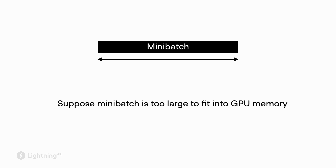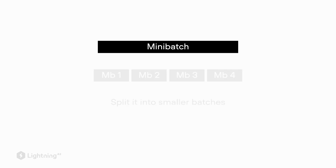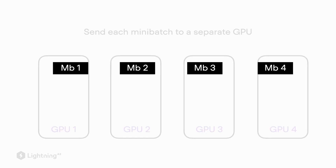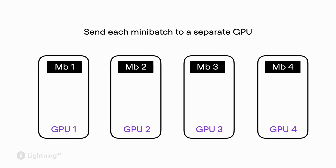What we can do is split that mini-batch into multiple smaller mini-batches, and then put each of these sub-mini-batches — which we also sometimes call micro-batches — onto a different GPU.